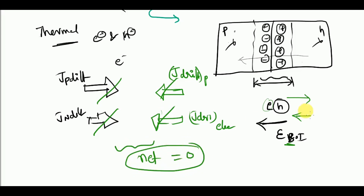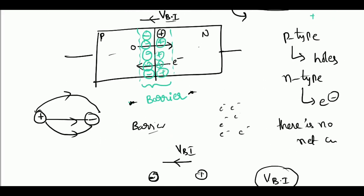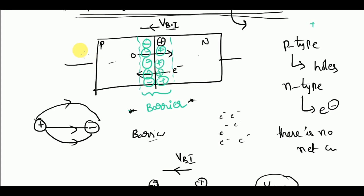So in the no-bias case — also called the equilibrium case — there is no net flow of current in the PN junction. In the next video I am going to explain the reverse bias case. Later we will cover forward bias and all the mathematical expressions required to solve numerical problems, which are very important for the GATE exam.